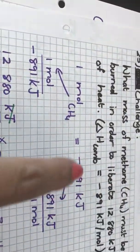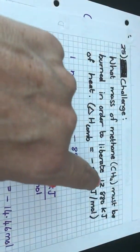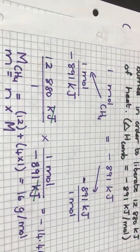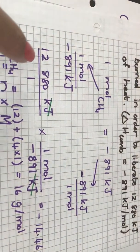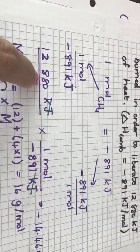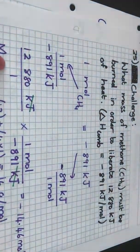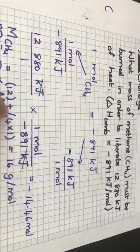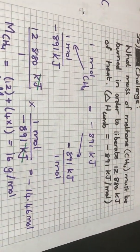Okay so how much energy do I have? In the question they tell me that this is the amount of energy that I want to liberate, so I want to find out if I need this amount of energy how much of the methane gas would I need. So it's 12,880 kilojoules over one which is my given, this was given to me, and I need to find out how many moles of methane gas will I need because once I know how many moles I have then I can calculate the mass again.